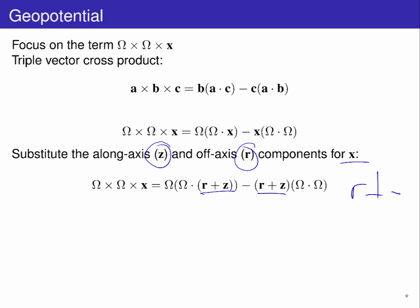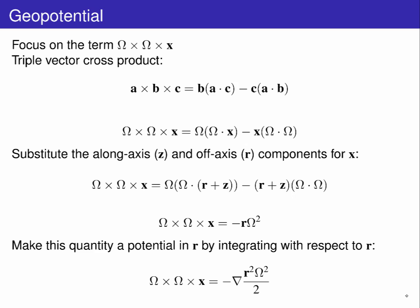Now, r and omega are orthogonal, so their dot product is zero. z and omega are in the same direction, so the omega omega z here is cancelled by the z omega omega here, leaving just the radial component and omega squared. We can take this one step further and express it as a gradient of the potential in r. We do so by integrating in r, getting omega cross omega cross x as equal to the negative of the divergence in the radius squared by omega squared over 2.